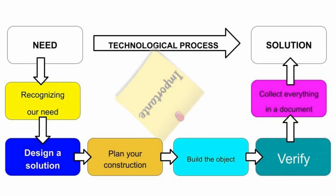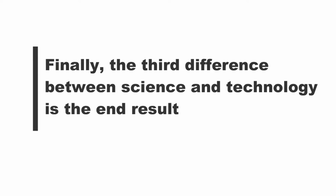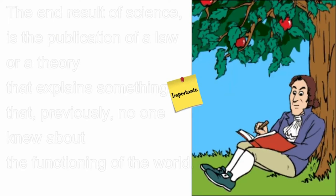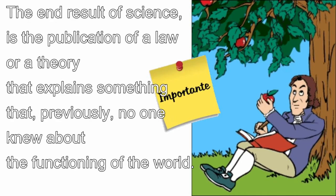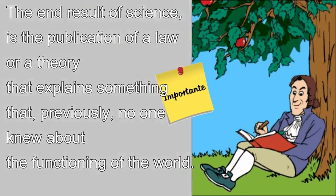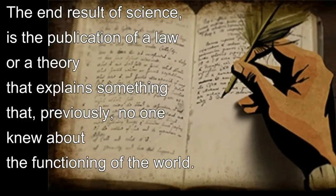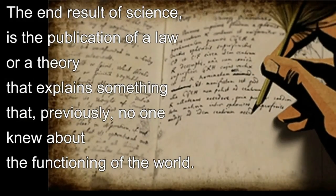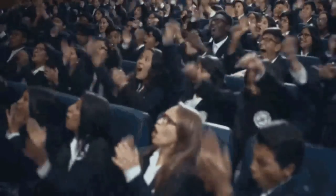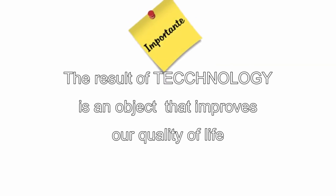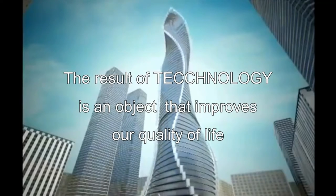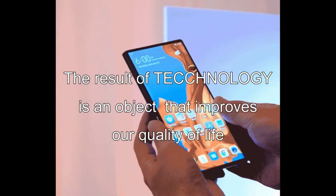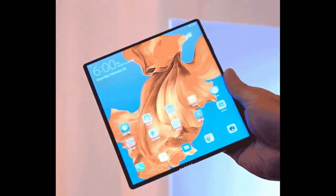And finally, the third difference between science and technology is the end result. The end result of science — or what a scientist tries to achieve — is the publication of a law or a theory in a scientific article, an article that explains something that previously no one knew about the functioning of the world. For an engineer or an architect, the result of their work is an object: a building, a telephone, a simple pen.